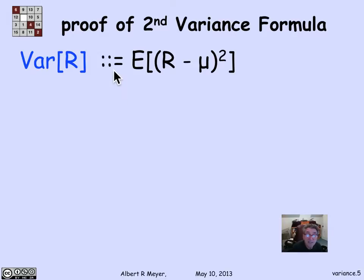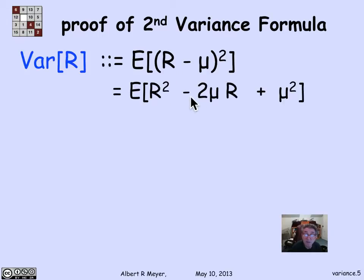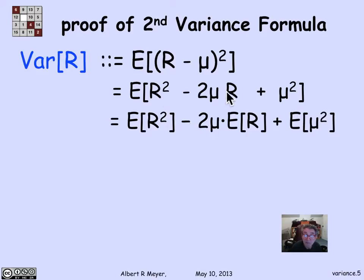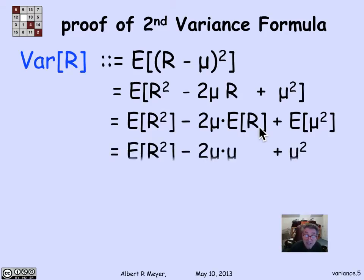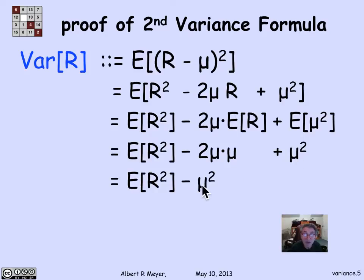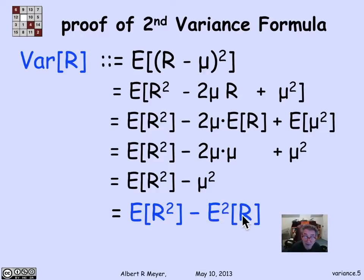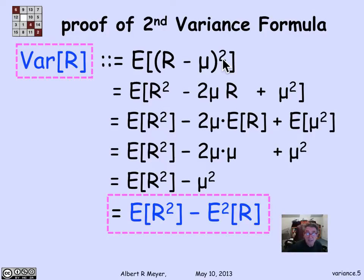The variance of R is by definition the expectation of (R minus mu) squared. Expanding gives the expectation of R squared minus 2mu·R plus mu squared. Applying linearity: E[R²] minus 2mu·E[R] plus mu squared. Since E[R] = mu, the last two terms give minus 2mu² plus mu², which equals minus mu². So Var(R) = E[R²] minus mu squared, proving the formula.